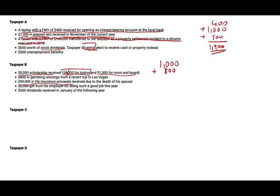$90,000 in life insurance proceeds received due to the death of his spouse — not included, not taxable. A $2,000 gift from his employer for doing a good job: employers don't give gifts, they compensate — so it's taxable and included. A $300 dividend received in January of the following year: since it wasn't received until January, it's not included this year. Therefore, Taxpayer B has $3,800 in gross income.